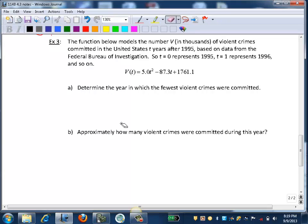The function below models the number V in thousands of violent crimes committed in the United States t years after 1995, based on data from the Federal Bureau of Investigation. So t equals 0 represents 1995, t equals 1 represents 1996, and so on.